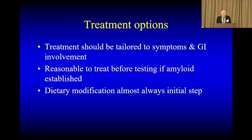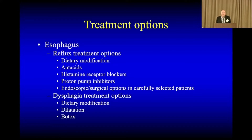Treatment should really be tailored towards symptoms and GI involvement. But because of how common these symptoms are in the population in general, it's very fair to start with treatment first before doing a lot of testing. Diet and lifestyle is often the first step before medications. The treatment really varies based on the area. With the esophagus, we'll often look at dietary change. If reflux is a big factor, antacids, histamine receptor blockers, and proton pump inhibitors tend to be the mainstay of therapy.